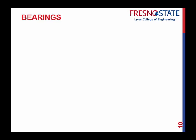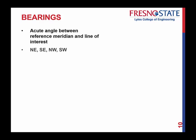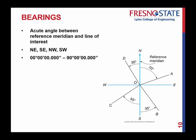Another way to call out angles is by using bearings. These are different from azimuths, so let's not get the two confused — you need to relate both and compute between them. Bearings are the acute angle between the reference meridian and the line of interest. They can be northeast, southeast, northwest, or southwest bearings, telling you your general direction. Bearings can only be between 0 degrees and 90 degrees, whereas azimuths go from 0 to 360.